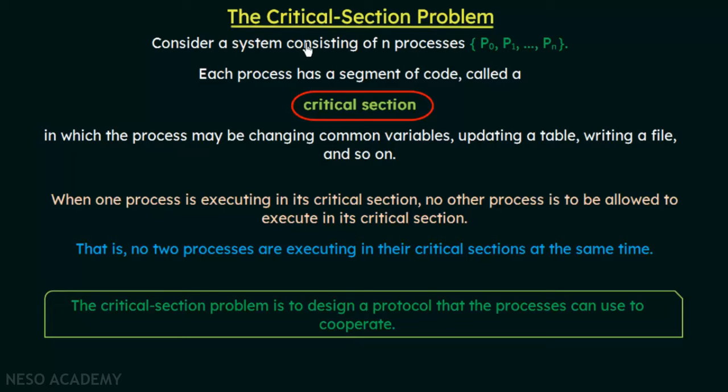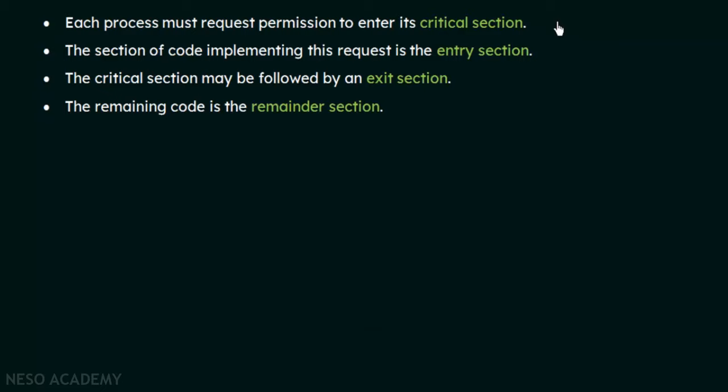There are certain rules that must be followed by processes whenever they are accessing their critical sections. Each process must request permission to enter its critical section. The section of code implementing this request is called the entry section.